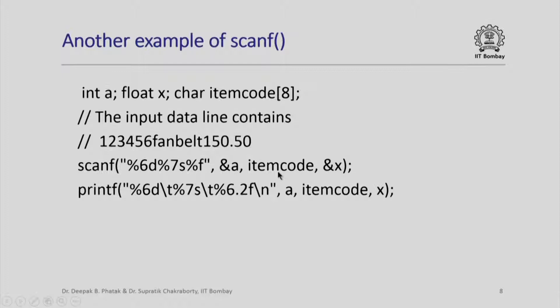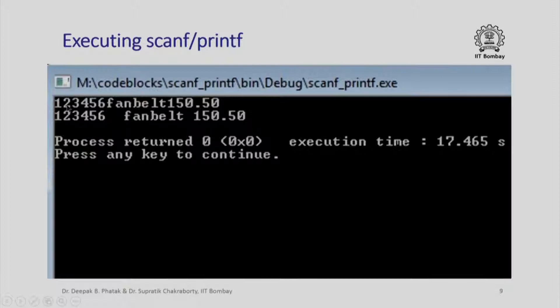If I print this using "%6d\t%7s\t%6.2f\n" — where \t are tab characters and \n is a newline character — let us see what the printf function will produce. Here is executing that program. This is the input line that I had given — a continuous line without any blank — and the cin operator would have completely failed to interpret the values correctly. But scanf does it properly and printf produces the correct output line.